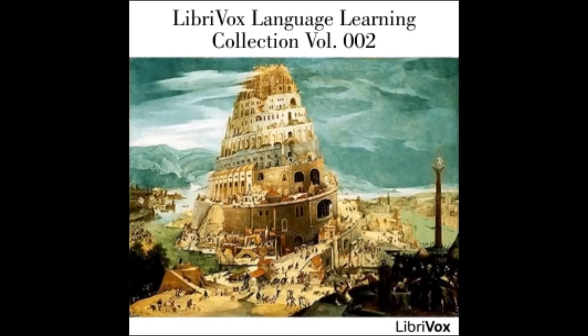Thème un. One: have you the fruit? Two: I have the apple. Three: have I the book? Four: yes sir, you have the book. Five: have you the bread or the meat? Six: I have the bread and the meat. Seven: have you the glass?